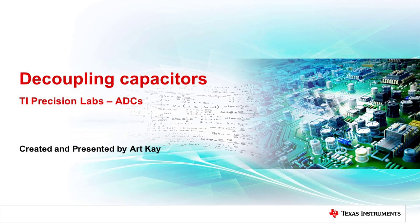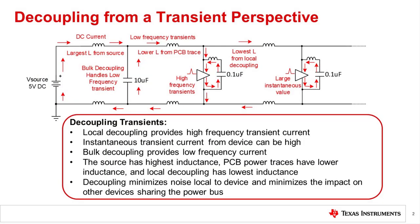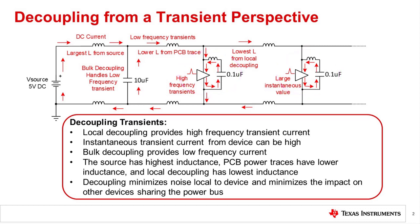Let's start by looking at the decoupling network from a transient and AC impedance perspective. One way to understand how decoupling works is to think of the decoupling network using a transient analysis. The decoupling network has bulk and local decoupling capacitors. Local decoupling capacitors provide high frequency transient current for device power supplies as needed. The instantaneous supply currents on digital circuits and switching analog circuits can be quite high. The local decoupling will provide short transients, and the bulk decoupling is a larger capacitor that helps recharge the local decoupling in between transients.